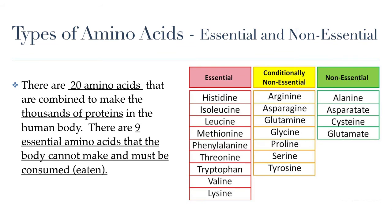As we learned earlier in the course, there are nine amino acids that are considered to be essential, which means we must get them from our diet. The other 11 are considered to be non-essential because we can make them from the essential nine. Under some circumstances, however, like in premature infants or in people who are very sick, some of the non-essential amino acids cannot be made and must come from food. These are called conditionally non-essential.